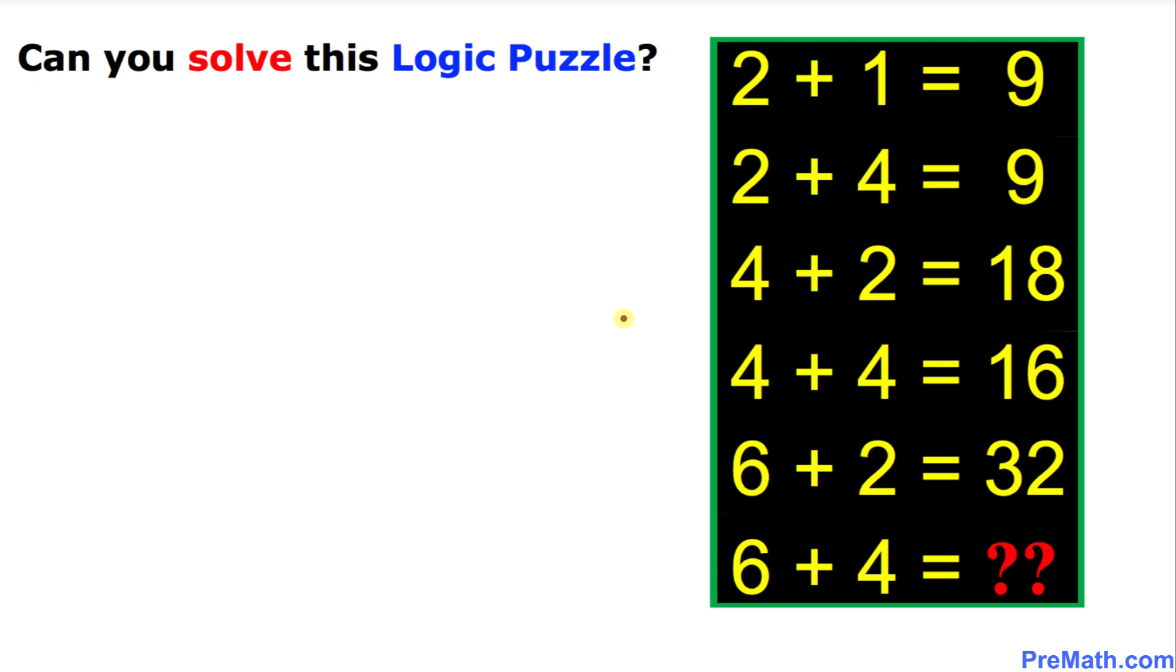Welcome to PreMath. In this video tutorial we are going to solve this math logic puzzle. Here is our puzzle: 2+1=9, 2+4=9, 4+2=18, 4+4=16, 6+2=32. Then 6+4 is going to be how much?